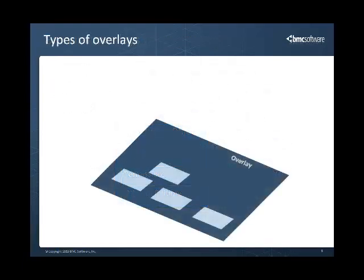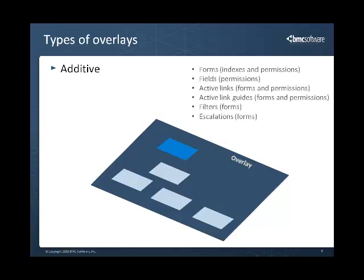You can apply different types of granular overlays to objects. The additive type enables you to specify elements that are added to characteristics inherited from the overlay object. If the definition of the origin object changes, for example due to an upgrade, the additions that you specify are appended to whatever is in the new origin definition. You can use the additive overlay type for unordered lists in object definitions.